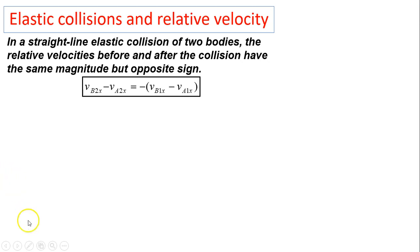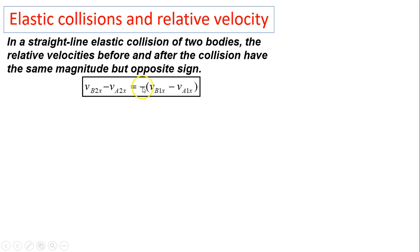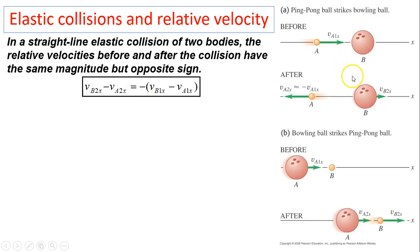Elastic collision and relative velocity: in a straight-line elastic collision of two bodies, the relative velocity before and after the collision have the same magnitude but opposite sign. After equals negative times before — you just put a negative sign to get the opposite direction.